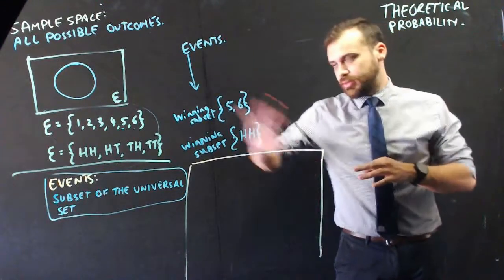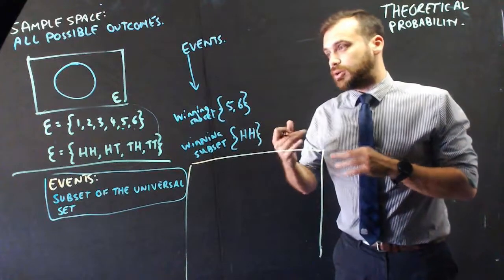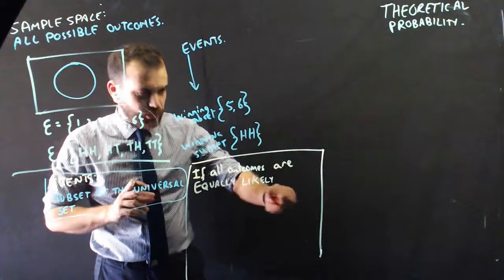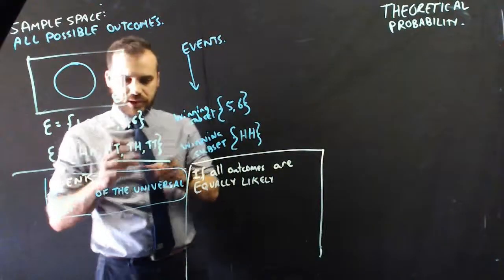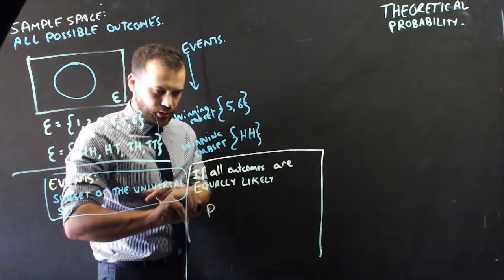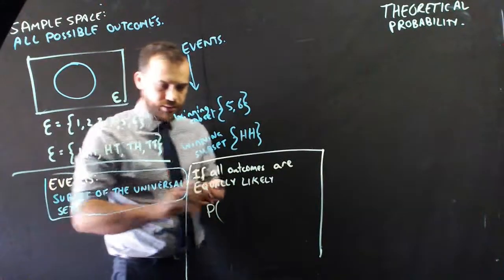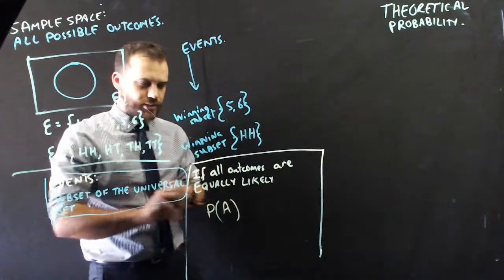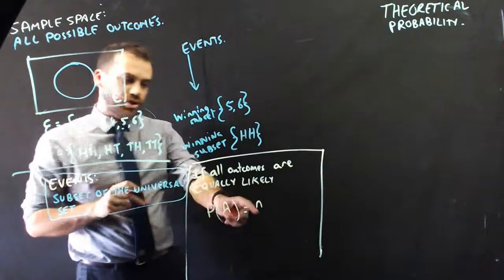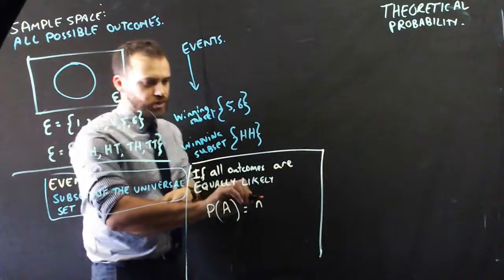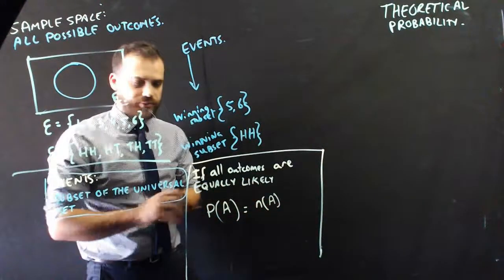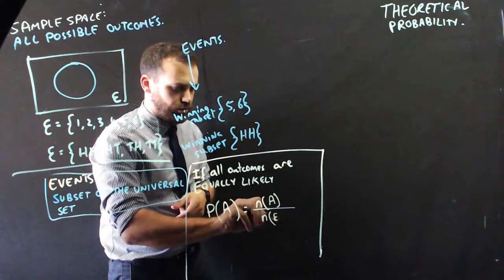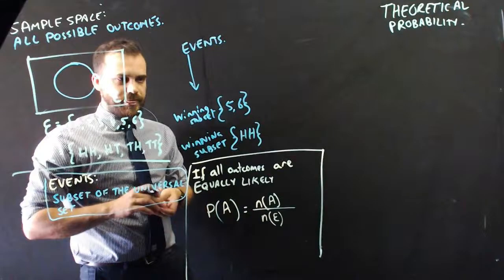So, in these, all of the outcomes are equally likely. And if all of your outcomes are equally likely, then we can find the probability of whatever that outcome is, let's call the outcome A, is going to be equal to the size of, or the number of things in subset A over the size of the universal set.